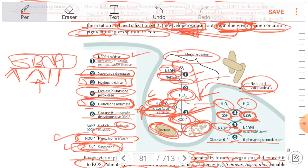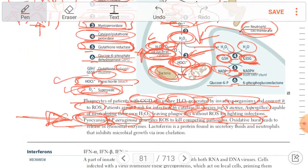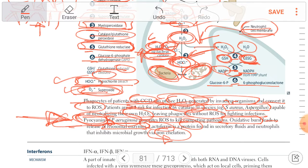Oxidative burst, also called respiratory burst, leads to releasing lysosomal enzymes. We also have lactoferrin, which is a protein found in secretory fluids and neutrophils. It inhibits microbial growth through iron sequestration (iron chelation).